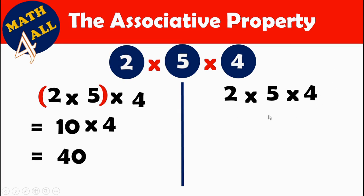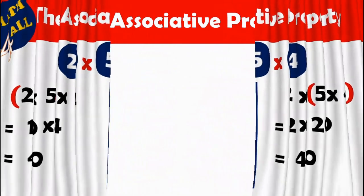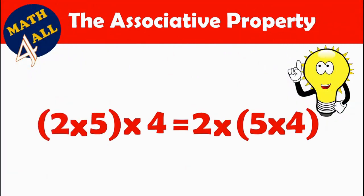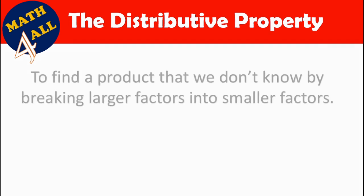Here we will start with 5 by 4. 5 by 4 equals 20, so 2 by 20 also equals 40. This was the associative property — changing the grouping of factors doesn't change the product. So starting with 2 by 5 gives the same result as starting with 5 by 4. Let's go to the next property: the distributive property.